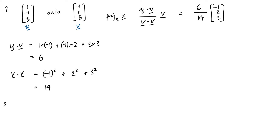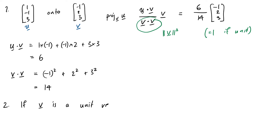Now for the second question, where we want to simplify our formula in the case that v is a unit vector. Remember, in this formula, v dot v is just the length of v squared. And if v is a unit vector, then that will just be 1. So the way it's going to simplify is that v dot v disappears from our formula. So if v is a unit vector, then the projection onto v of u will simply be (u dot v) times our vector v.